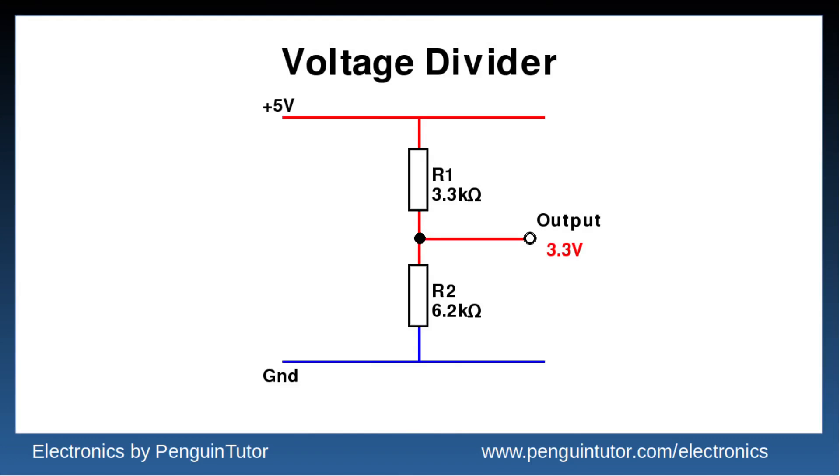Those resistors are not common values, so using the E48 series you could use a 3.3 kilo ohm and a 6.2 kilo ohm which will give you just under 3.3 volts.